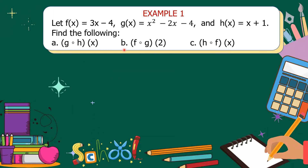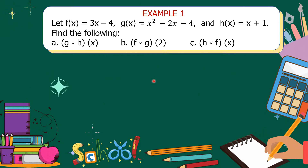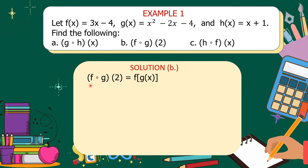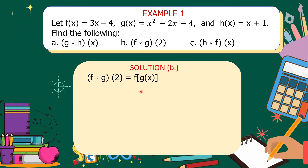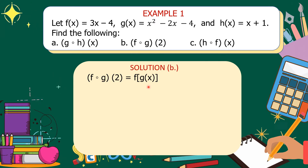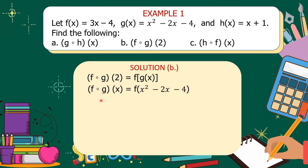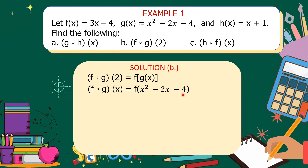Now let's solve letter B, which is f circle g of 2. As you can see, x has a value of 2. For the solution, first write the formula: f circle g of 2 is equal to f of g of x. Notice that we don't replace x with 2 yet — we first apply the definition of the composite function. So f of g of x first, and after applying the definition, we will substitute 2 for x. So f circle g of x is equal to f of x squared minus 2x minus 4, replacing g of x with its value x squared minus 2x minus 4.